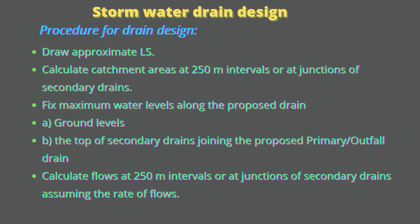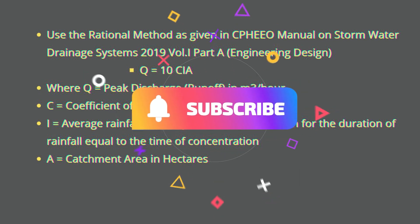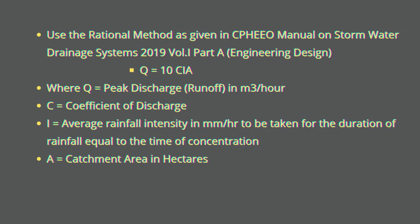Calculate flow at 250-meter intervals or at junctions of secondary drains. Use the rational method as given in the CPHEEO Manual on Stormwater Drainage System, Volume 1, Part A — Engineering Design.